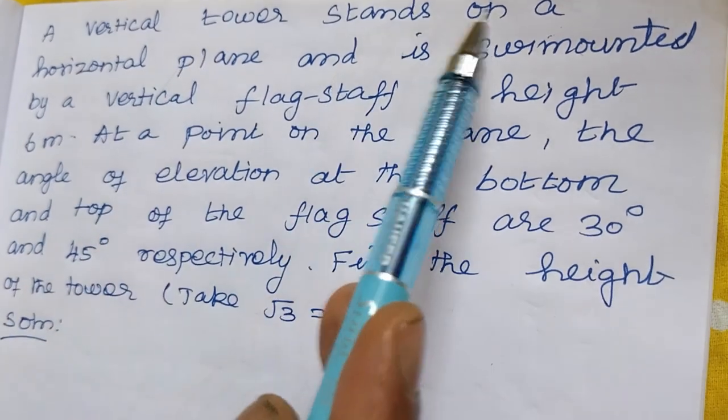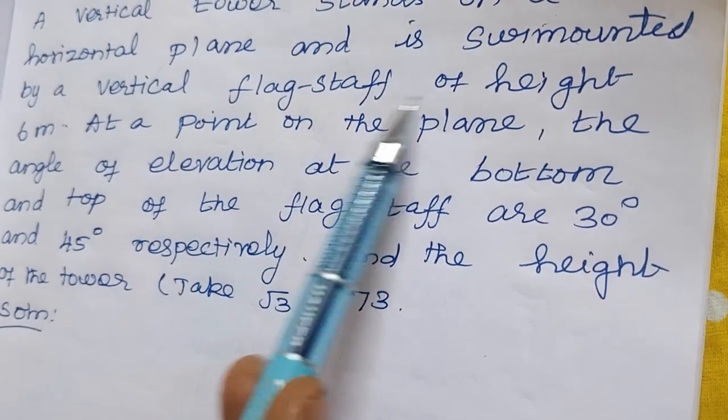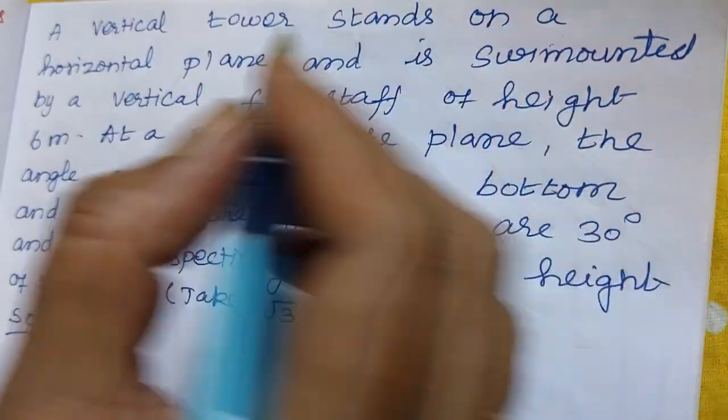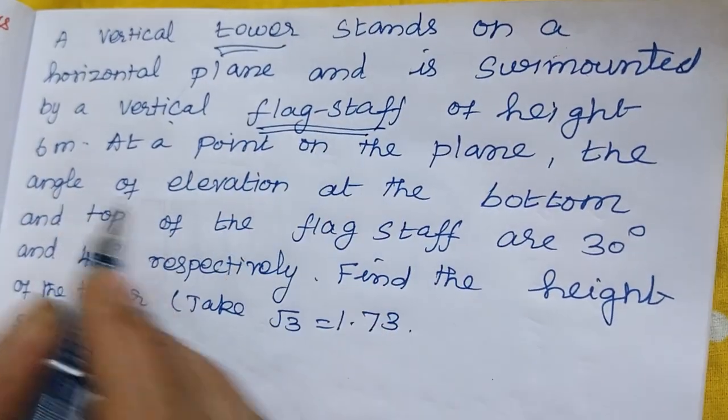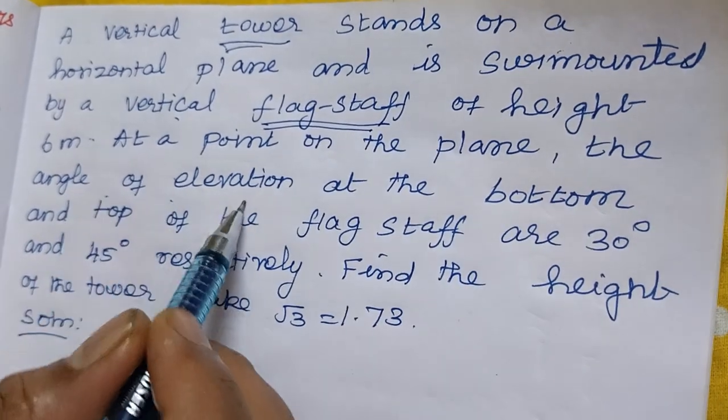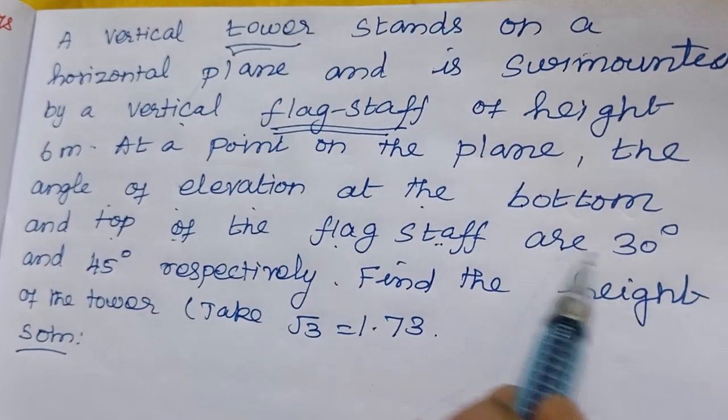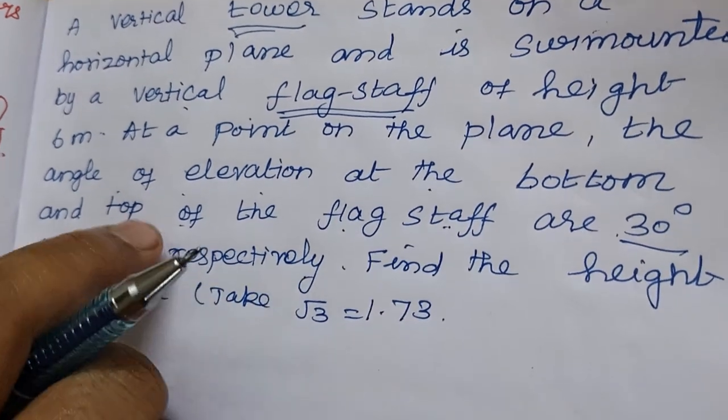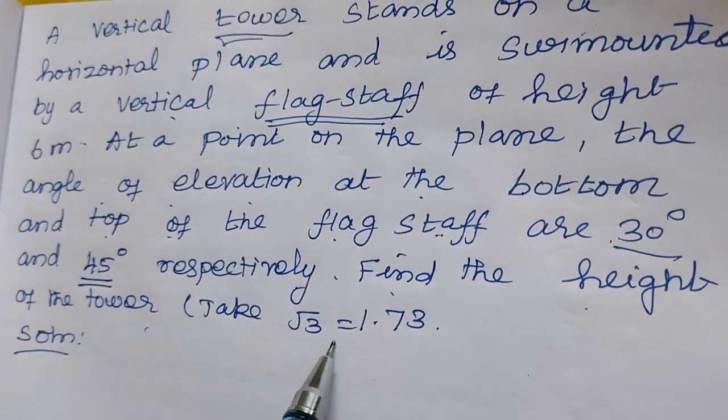A vertical tower stands on a horizontal plane and is surmounted by a vertical flagstaff of height 6 meters. So here vertical tower first, then vertical flagstaff. At a point on the plane, the angle of elevation at the bottom and top of the flagstaff are 30 degrees and 45 degrees respectively. So two angles are given, the top angle and the bottom angle. Find the height of the tower.